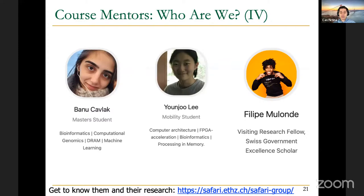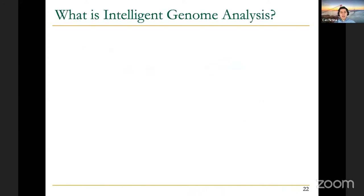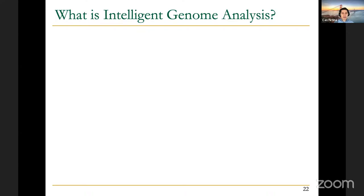Let me state the general goal and what we are trying to achieve by offering these projects — what we're aiming for in our group overall. We really want to achieve intelligent genome analysis. We're going to be offering projects so that we can achieve intelligent genome analysis in five main directions. These five directions should be accomplished altogether so that we can achieve intelligent genome analysis.